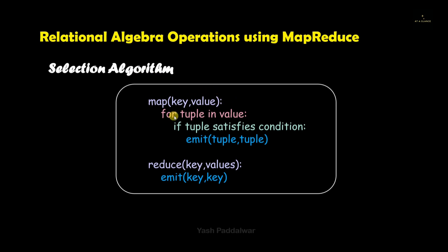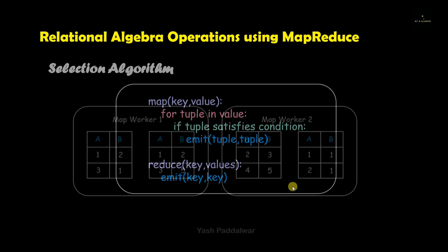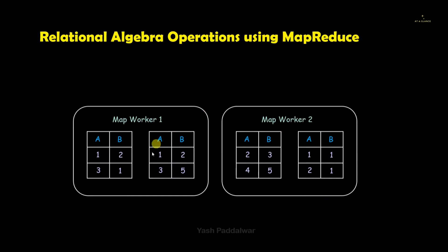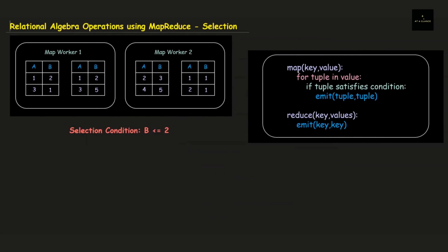If you haven't understood this algorithm yet, don't worry — we'll be looking into an example, and by the end of that example you will be aware of this particular algorithm. Here we have taken two Map workers. Big data divides the entire data into parts and each part will be processed separately and parallelly. Each Map worker is having two tables. Note that all these tables are part of a single table that contains two attributes A and B.